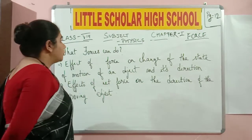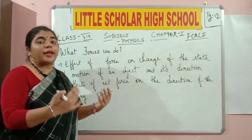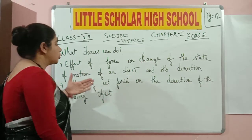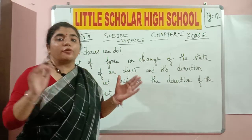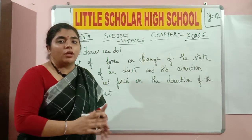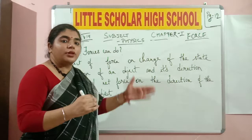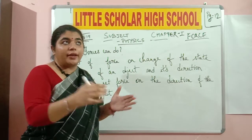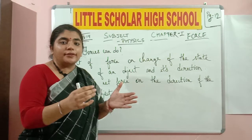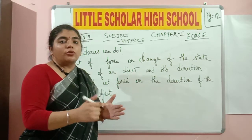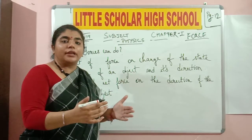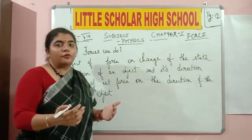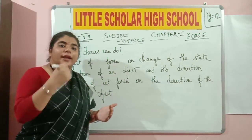We need to talk about what forces can do — what pulling and pushing on an object can actually do to it. The first effect is the change of state of motion of an object and its direction. For example, in a playground playing basketball, one player passes the ball slowly. As more players join and apply more force, the ball moves much faster. The more force applied on the ball, the more its motion increases — it moves faster gradually.